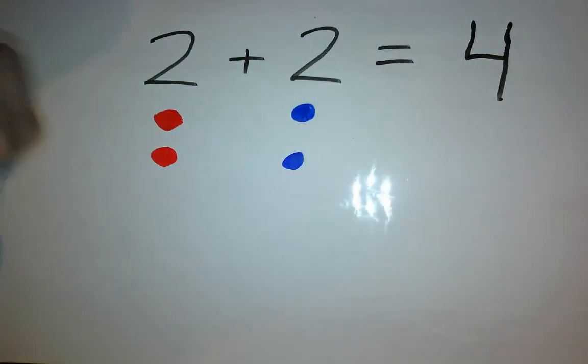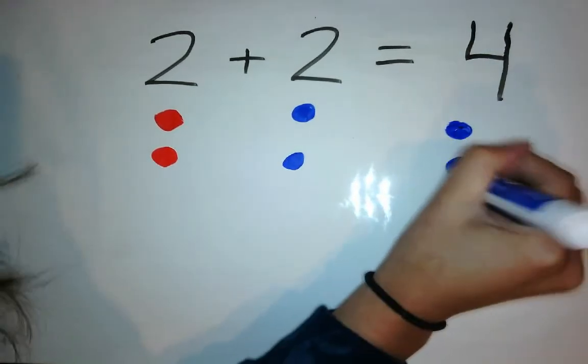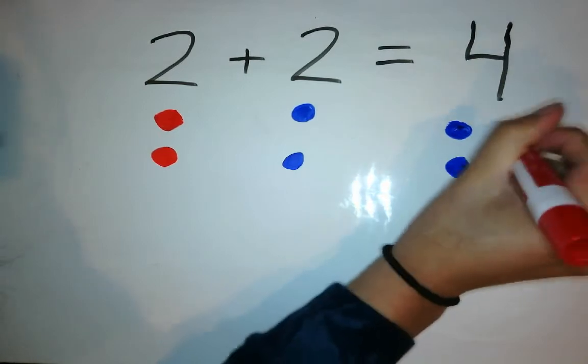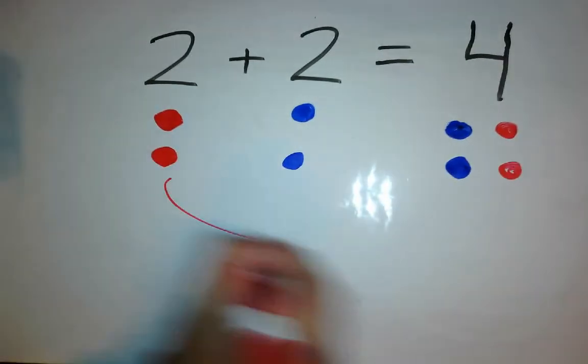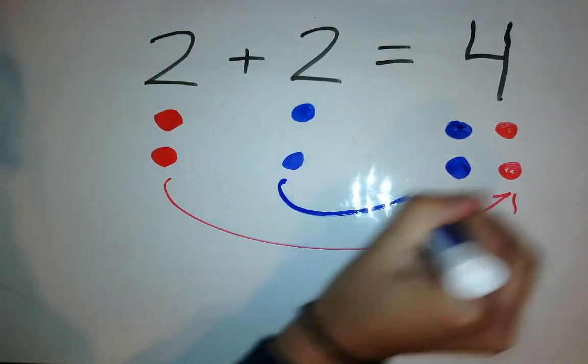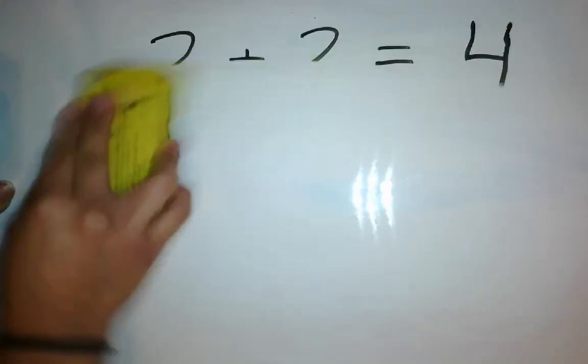2 plus 2 equals 4. Or you can put those together by just showing. So those would go there. And those would go there. And there's four dots there, as you can see. Alright, let's try another one.